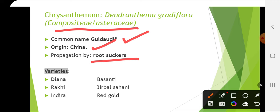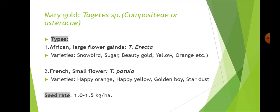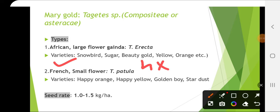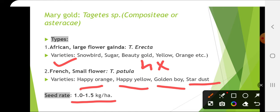Marigold has two types: African marigold (Tagetes erecta), generally larger in size, with varieties Snowbird, Sugar, Beauty Gold, Yellow and Orange; and French marigold (Tagetes patula), smaller in size and generally tetraploid in nature, with varieties Happy Orange, Happy Yellow, Golden Boy and Stardust. Seed rate is 1 to 1.5 kg per hectare.